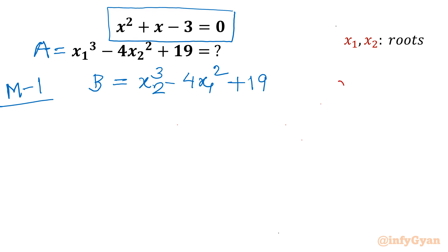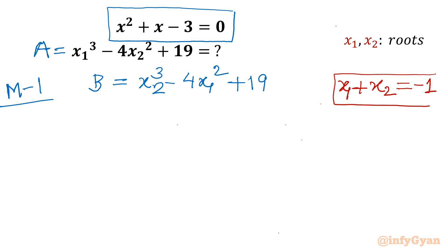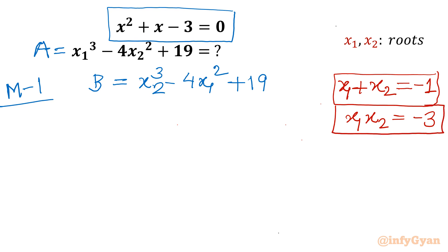The sum of roots: x1 + x2 = -b/a = -1. That is our first equation. The second equation, the product of roots: x1 × x2 = c/a, where c is -3 and a is 1, so this value is -3.